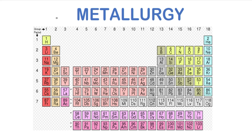For example, Group 1 elements — namely lithium, sodium, potassium, rubidium, cesium, and francium — have the tendency to lose one electron and acquire a mono-positive charge. Similarly, Group 2 elements like beryllium have the tendency to lose two electrons and acquire a dipositive charge.